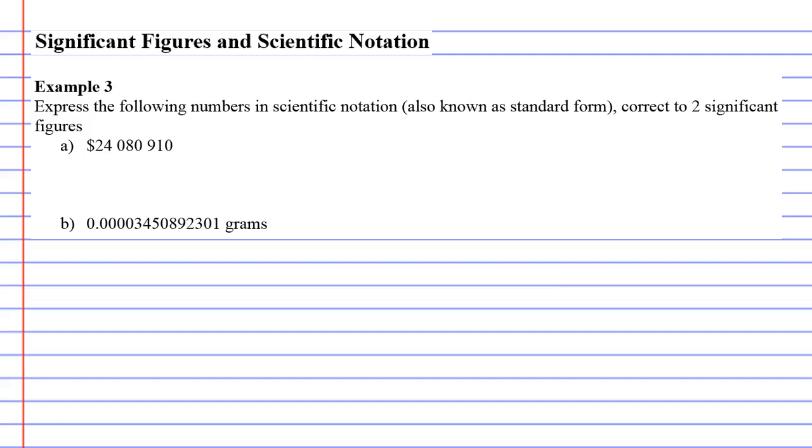And it wants it correct to two significant figures. So when you're doing ones like these, I like to do the significant figures part first. You can do it in any order, but I think it's easier to start with the significant figures. So both of them are being done to two significant figures. The two most significant figures are the two and the four, we'll make the rest zero. So that's $24 million. And we'll do the significant figures for question B as well.